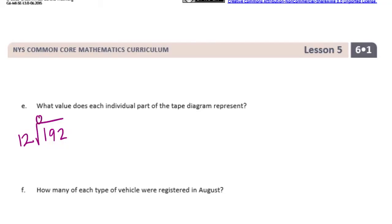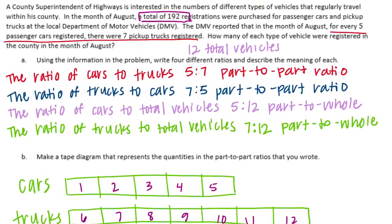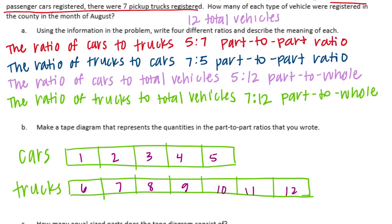12 can't go into 1, but it goes into 19 one time. One times 12 is 12; subtract to get 7, bring down the 2. 12 goes into 72 six times; six times 12 is 72 with no remainder. So each value of the diagram represents 16 — each of these pieces is worth 16.